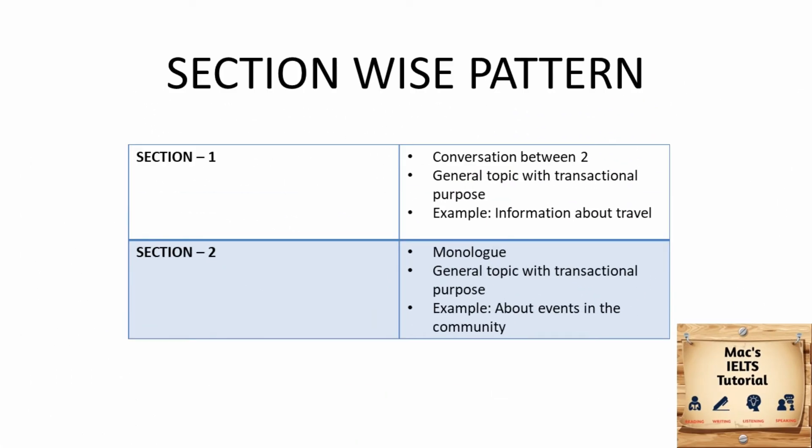Talking about the section-wise division, section 1 is a conversation between two people about a general topic with a transitional purpose, for example, finding out information about travel. Section 2 is a monologue on a general topic with a transitional purpose, for example, giving information about events in the community.